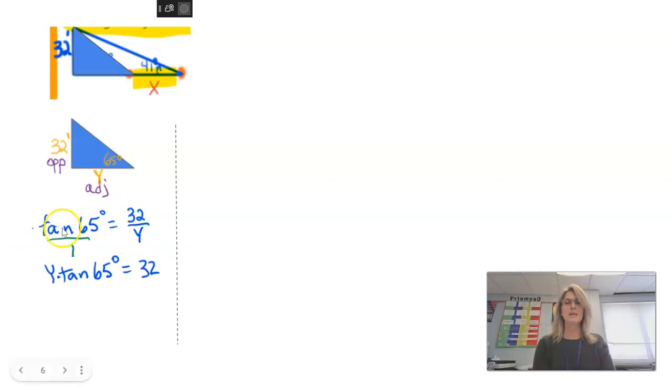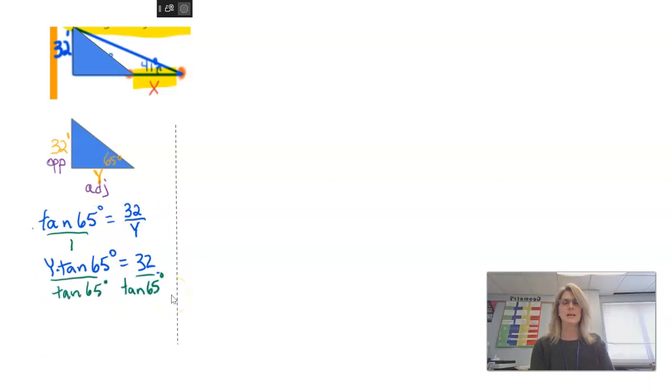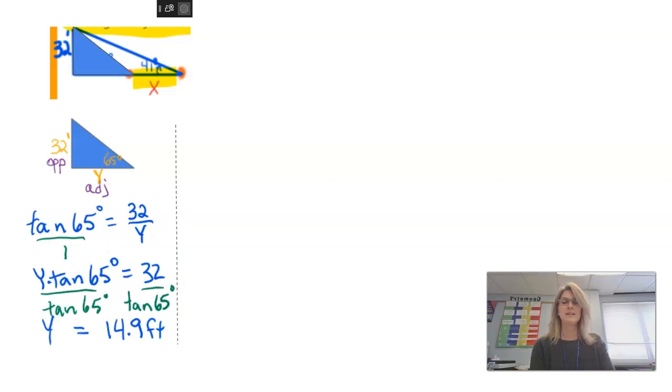I'm going to make it a ratio equaling another ratio. That's a proportion. So I know that it's true if I multiply y times tangent of 65 is equal to 32 times 1. And here I need to divide both sides. So 32 divided by tangent of 65 is going to be 14.9 feet. Great. So now I know my friend is standing 14.9 feet away from the flagpole.